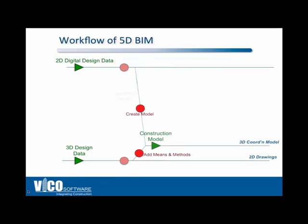After you've determined what's changed, if it's 2D data, somebody's got to create a model. If it's 3D design data, somebody's got to create what we call a construction model or a coordination model from that. That's where the means and methods of construction come in. I'm not one to fault the design team for not including those — I think it's outside their scope.